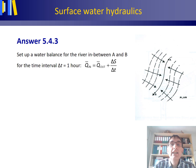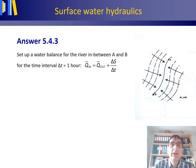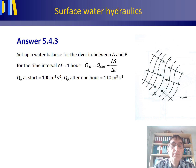If we have an increase in storage, delta S over delta T is a positive number. If we have a decrease in storage in the channel reach AB, delta S over delta T is a negative number.